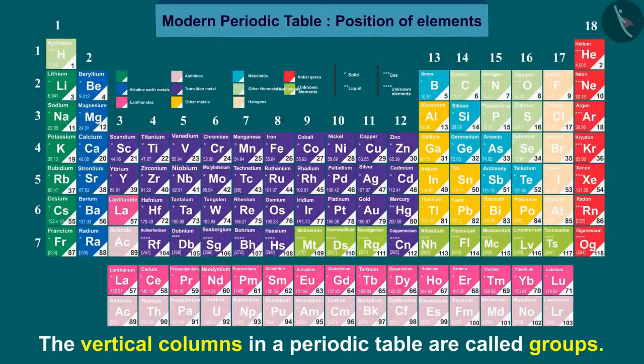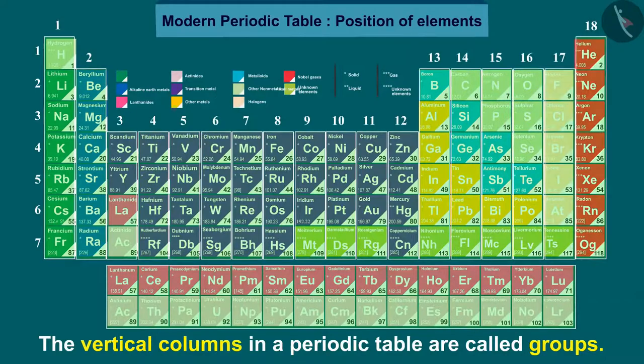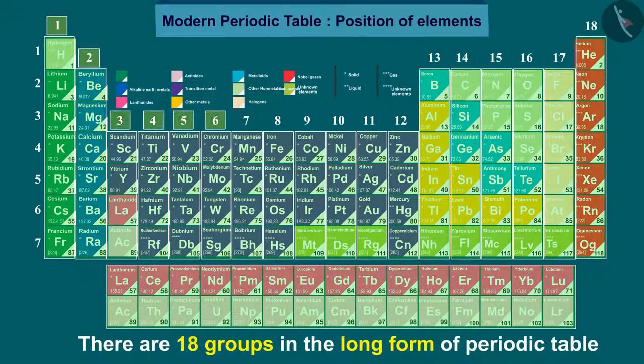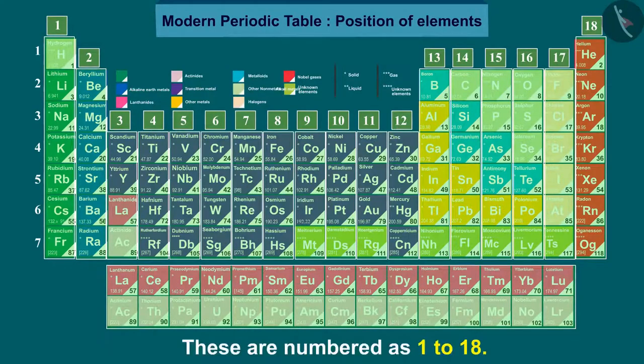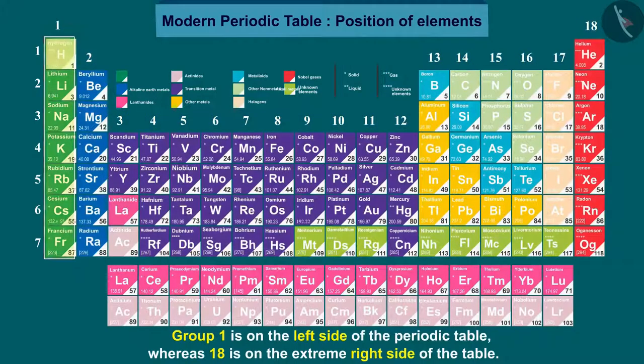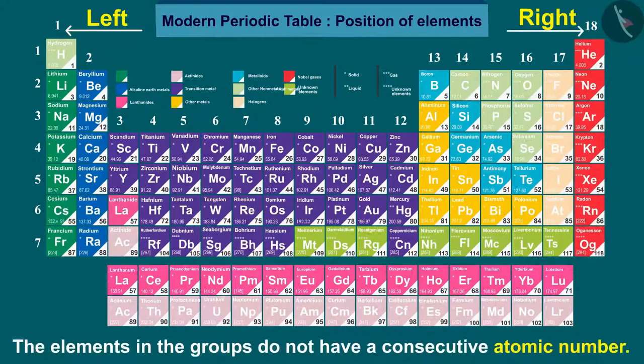The vertical columns in a periodic table are called groups. There are 18 groups in the long form of periodic table. These are numbered as 1 to 18. Group 1 is on the left side of the periodic table whereas 18 is on the extreme right side of the table. The elements in the groups do not have a consecutive atomic number.